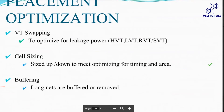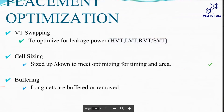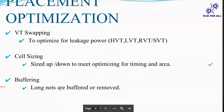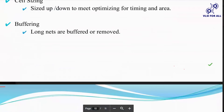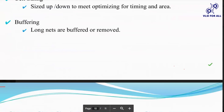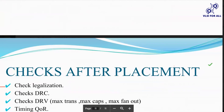If we see setup violations in the placement stage, we need to check whether we have HVT cells present in our design and perform VT swapping from HVT to LVT. We need to check the driver strength of particular cells — if a cell's driver strength is D1 we need to upsize the driver. We should also check whether there are long nets, and if so break them by adding a buffer or inserting a buffer in the data path.